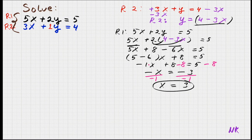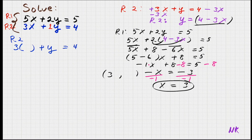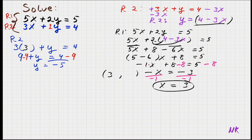We have part of our point: x equals 3. To find y, I'll use row 2 where y has a coefficient of 1: 3x plus y equals 4. Substituting x equals 3: 3 times 3 is 9, so 9 plus y equals 4. Subtracting 9 from both sides gives y equals 4 minus 9, which is negative 5. So the second value of our point is negative 5.